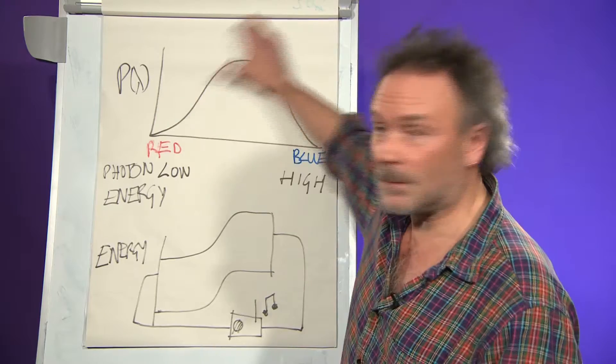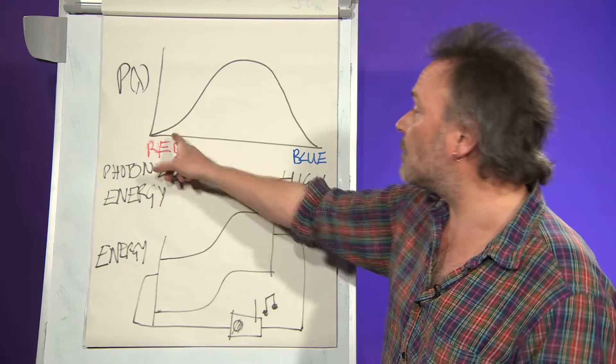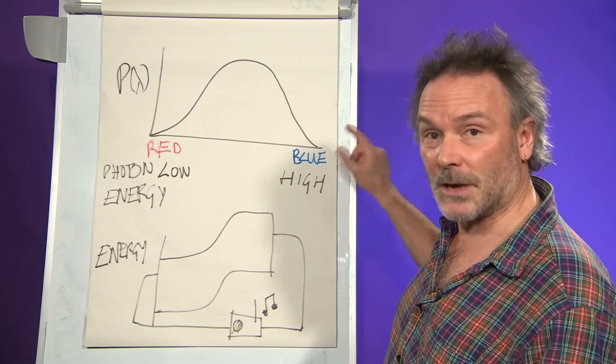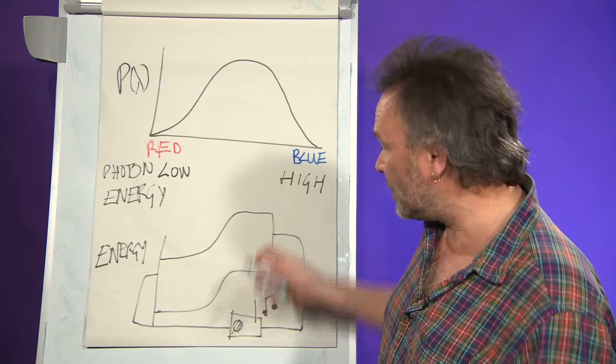The problem with it is that the sunlight comes in a spectrum, it's a rainbow. It's red at one end and the photon energy is low in the red end, blue at the other end it's got a high photon energy, and this is what the cell looks like, this is the energy levels in it inside the cell.